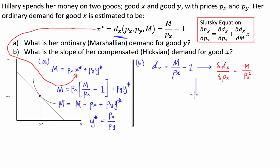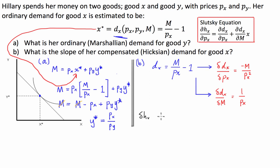Next, we take another partial derivative, this time with respect to income M. δD(X)/δM is simply equal to 1 divided by P(X). Now we substitute both of these back into our Slutsky equation: δH(X)/δP(X) equals δD/δP, which is negative M divided by PX squared, plus (1 over PX) times X.